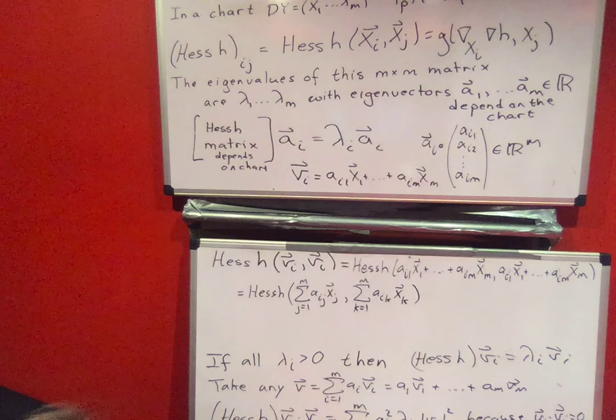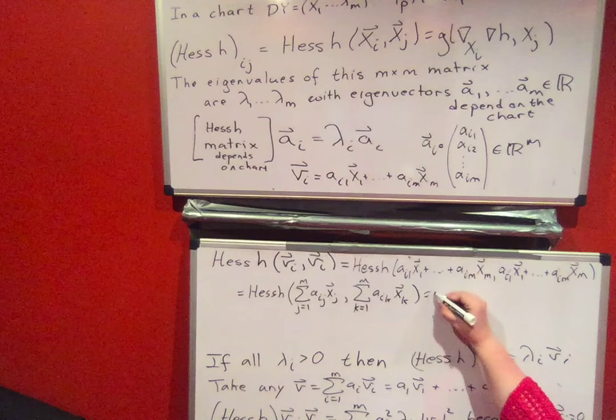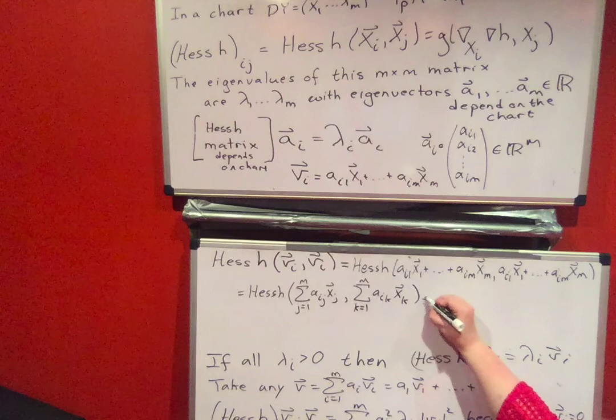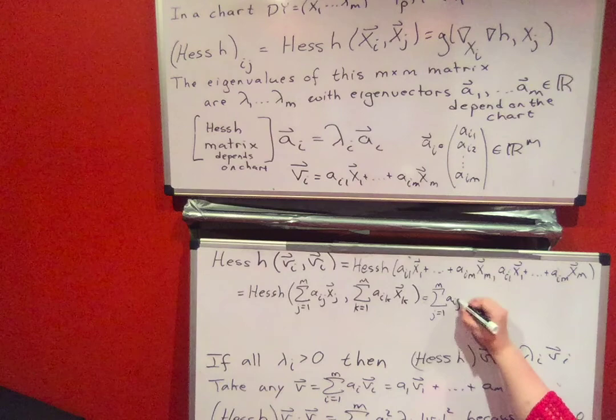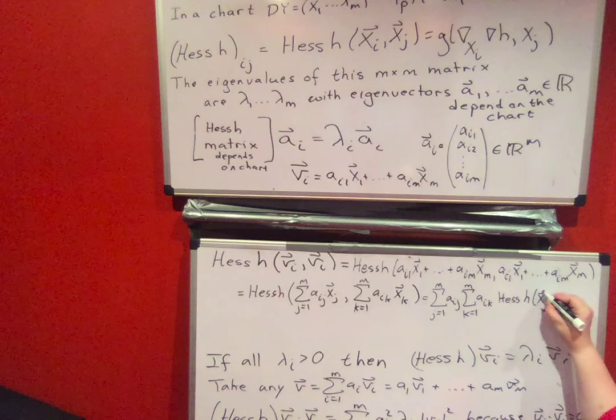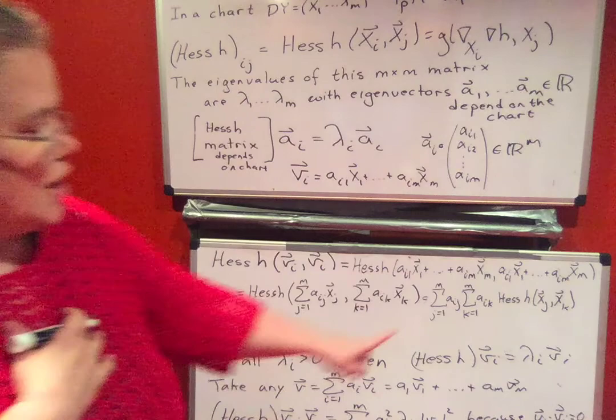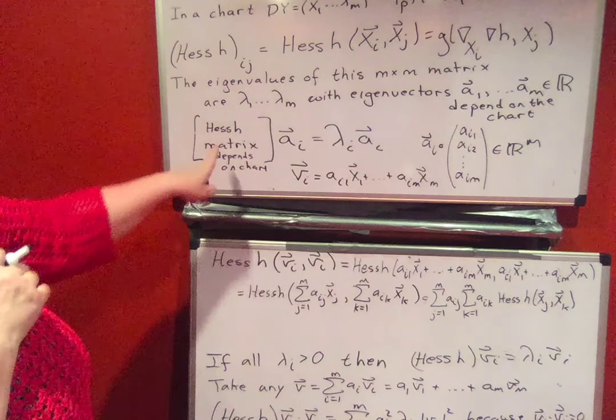And then we'll remember that the Hessian is actually linear, and since the Hessian is linear, that means I can take the sums and the coefficients out. So when I take the sums and the coefficients out, I get sum j equal one to m a_ij sum k equal one to m a_ik of Hessian h x_j x_k.